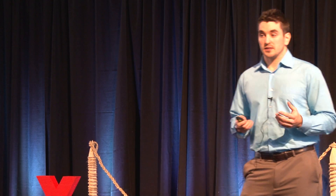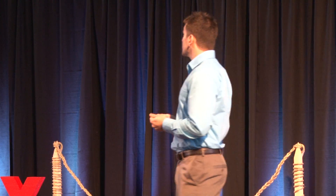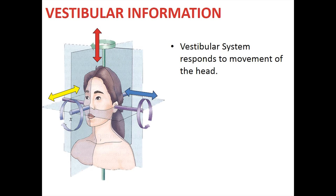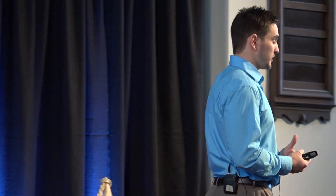So what kind of information does the vestibular system provide us? The vestibular system provides us information about how the head is moving, both in a rotational sense and in a linear sense. It transmits this information to the brain via the vestibular nerves.